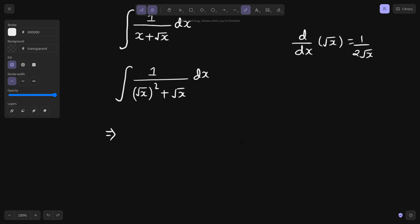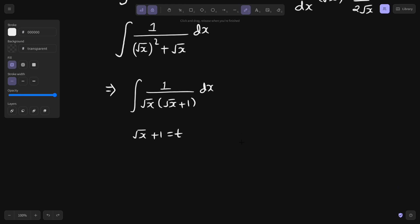So if you take root x common in the denominator, you will get root x from here and 1 from here. Now if you take whatever is inside the bracket as t, the derivative of root x is 1 by 2 root x, derivative of 1 is 0.